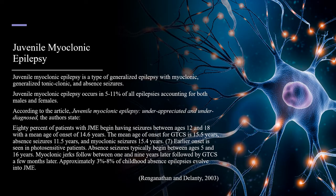Juvenile myoclonic epilepsy is a type of generalized epilepsy with myoclonic, generalized, tonic-clonic, and absent seizures. Juvenile myoclonic epilepsy occurs in 5-11% of all epilepsies, accounting for both males and females. According to the article 'Juvenile Myoclonic Epilepsy: Underappreciated and Underdiagnosed,' 80% of patients with juvenile myoclonic epilepsy begin having seizures between ages 12 and 18, with a mean age of onset of 14.6 years.